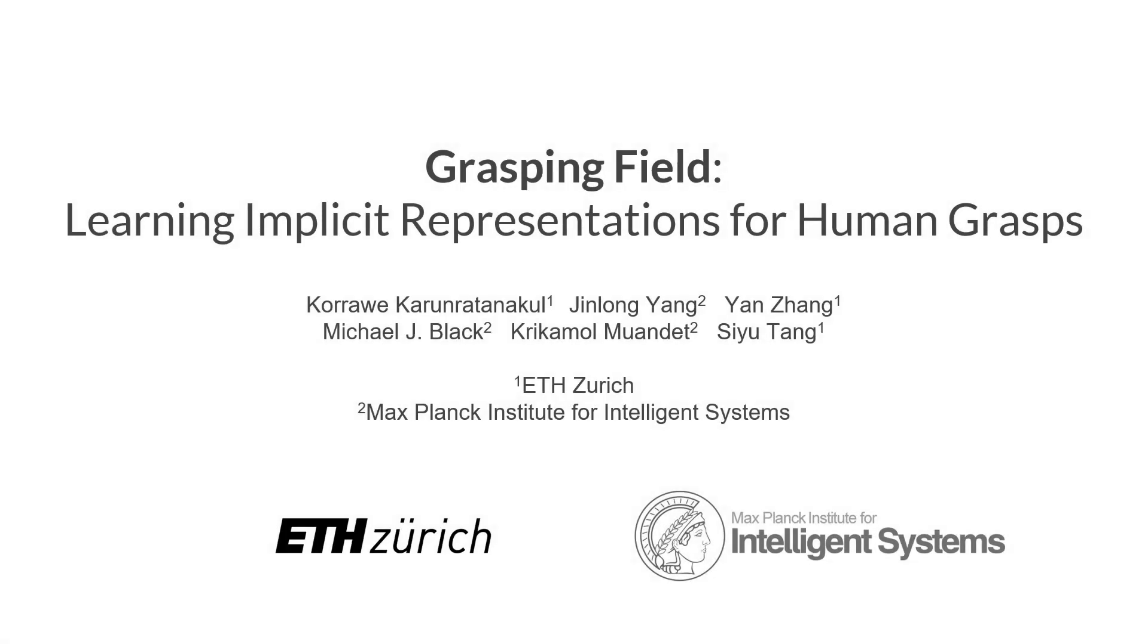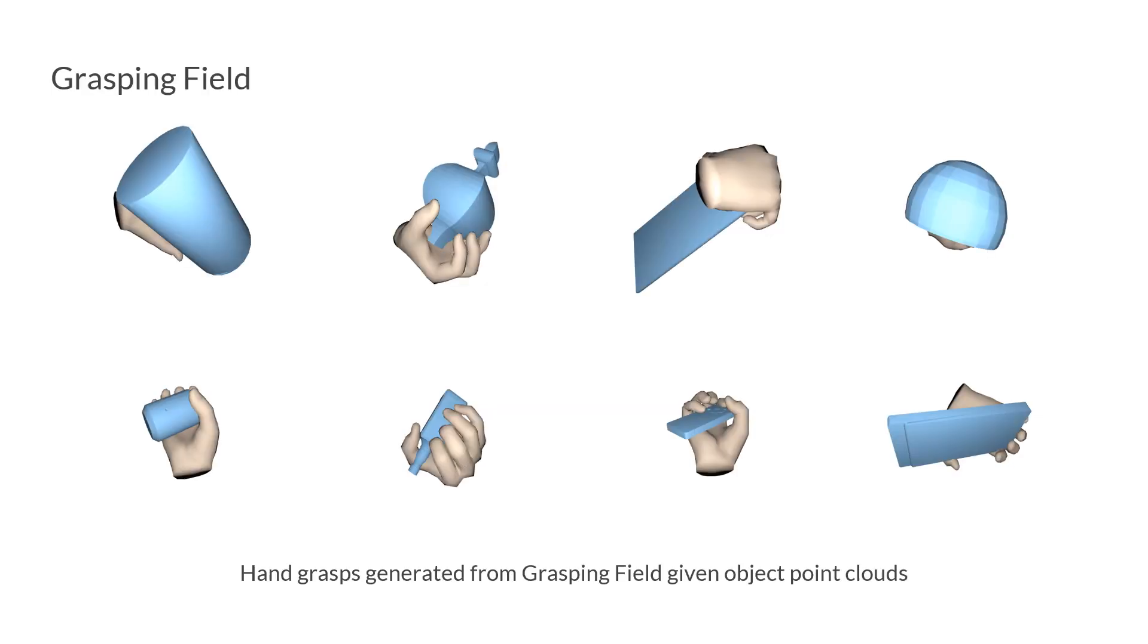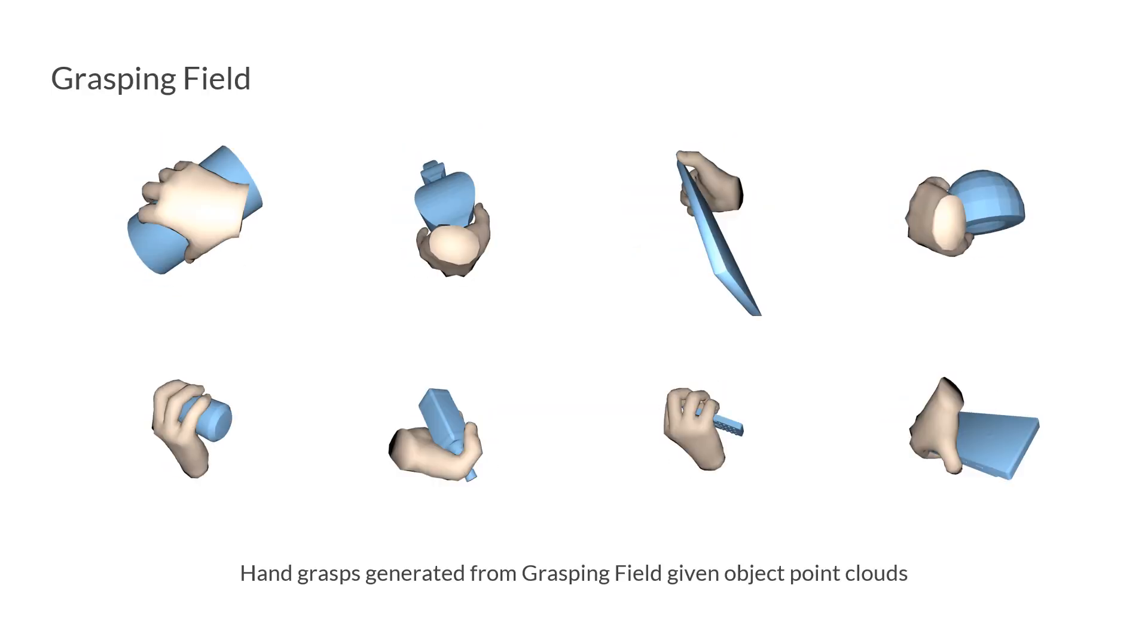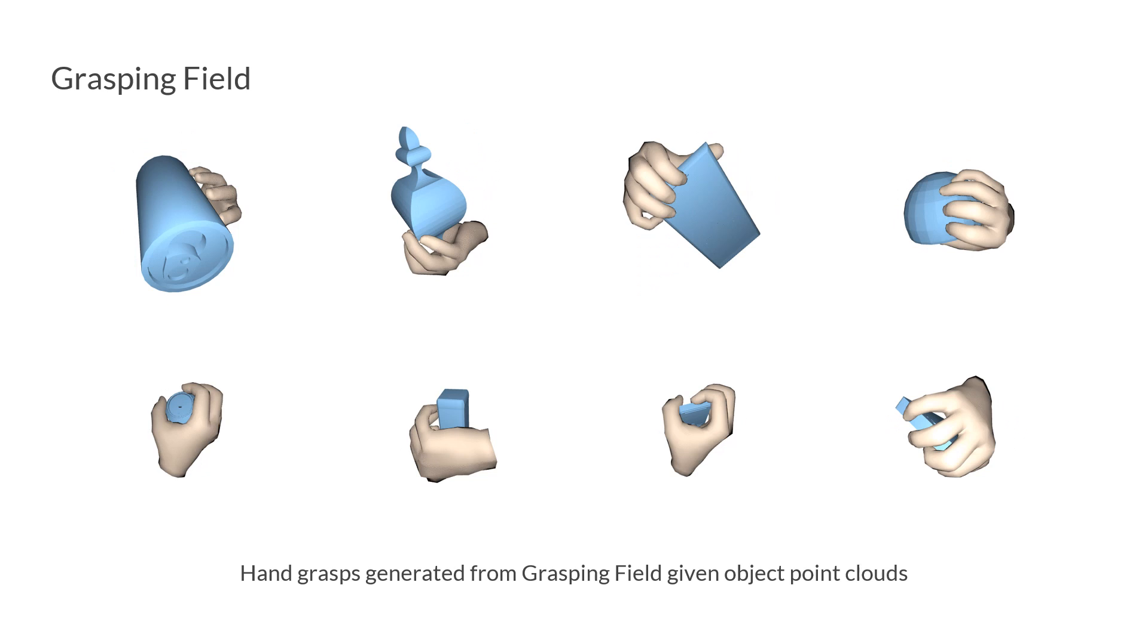We introduce grasping field, learning implicit representations for human grasps. Capturing and synthesizing hand-object interaction is essential for understanding human behaviors.